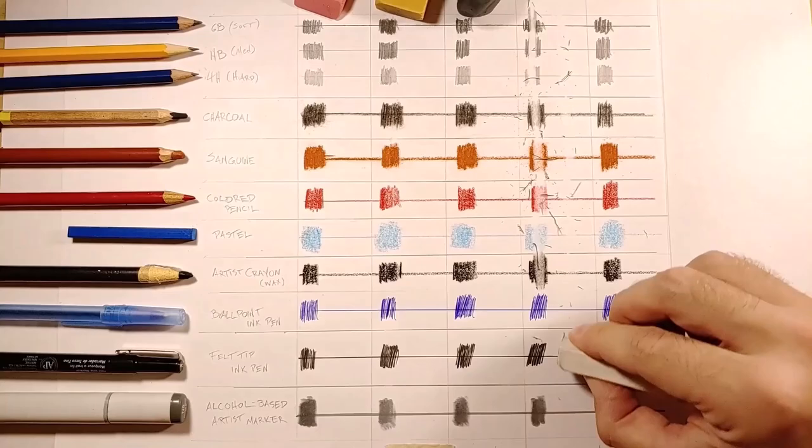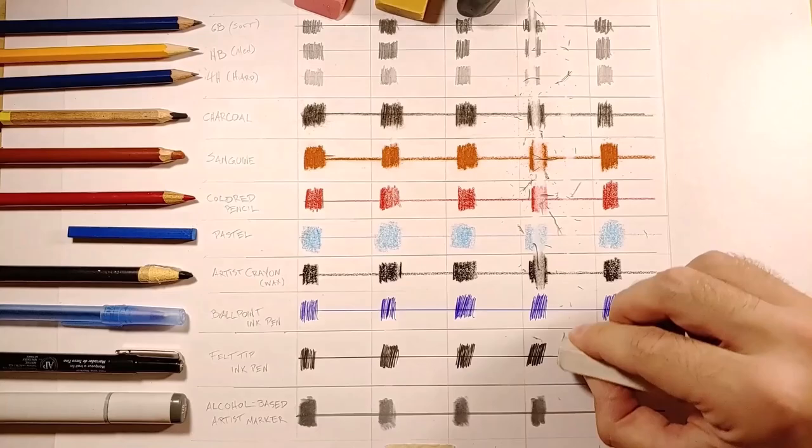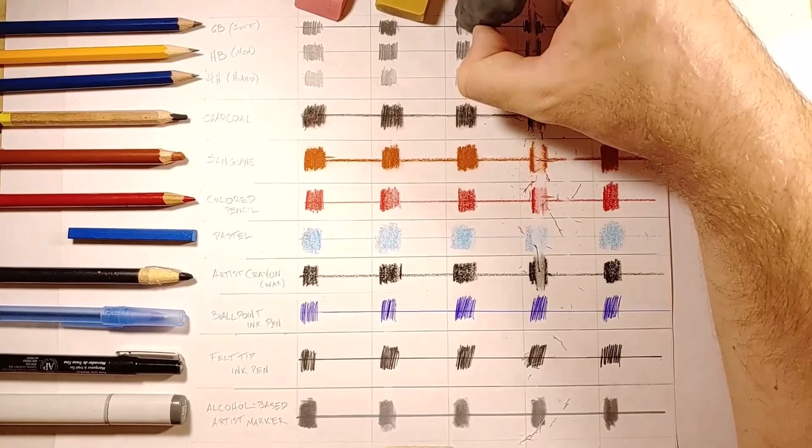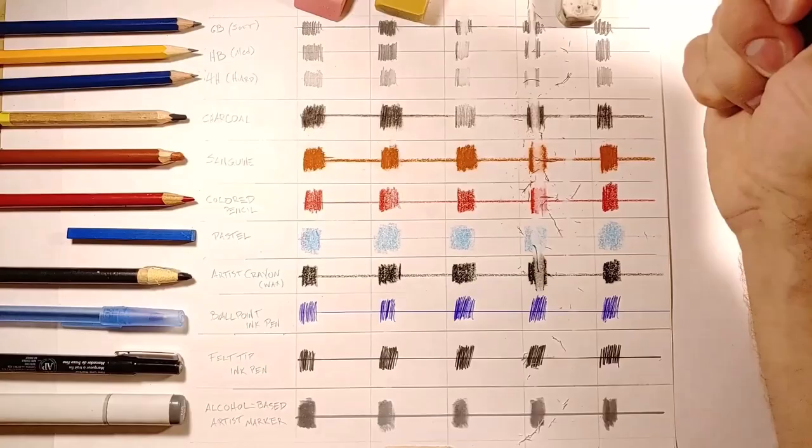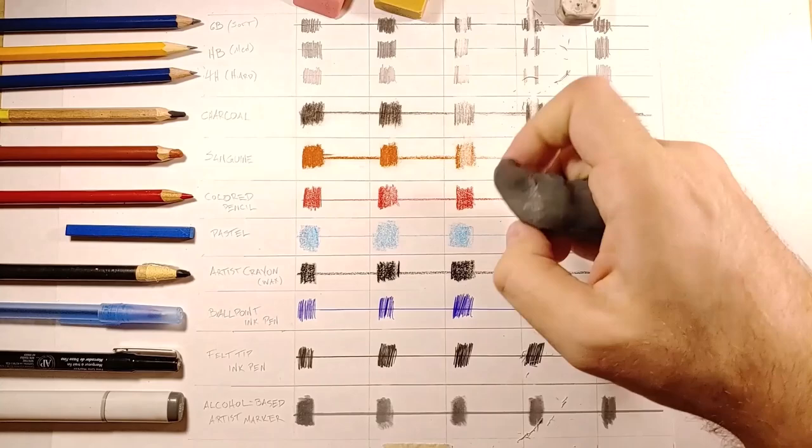With the kneaded eraser this thing is glorious. Took off really well with the softer stuff like the charcoal, the sanguine, and the softer graphite. A little bit of residue left but notice how there's no crumbly things at all with this thing, it's just amazing, it's the best. It didn't take off the colored pencil or the pastel really well, artist crayons not happening, and of course same thing with the pens and marker.